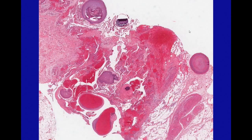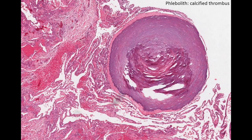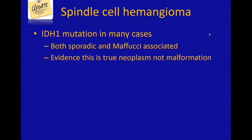Spindle cell hemangioma can also have large thrombi that have a tendency to calcify. These are called phleboliths, and you can even see these on x-rays and imaging — little calcified foci within the spindle cell hemangioma.